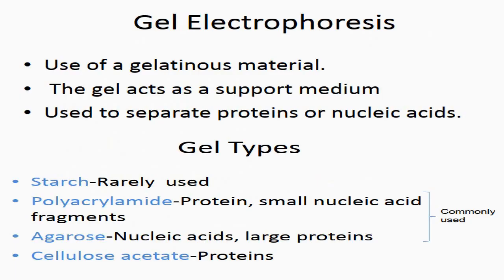Third, agarose is commonly used to separate nucleic acids and large protein fragments. Fourth, cellulose acetate is used to separate proteins, as mentioned in the next slide.